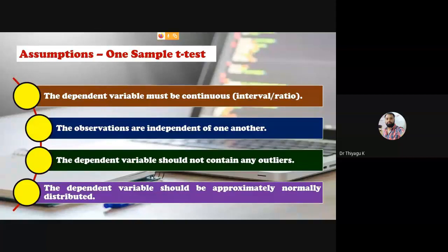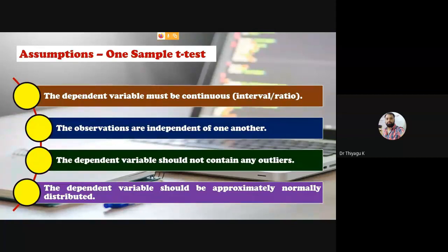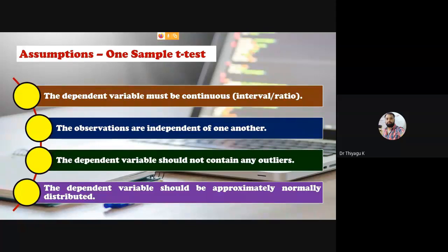The unrelated sample means each observation is independent of one another. The dependent variable should not contain any outliers. For example, if I conducted an examination out of 100 marks and nearly 99% of students scored above 60, but two students scored around 30 and 35, those outlier scores affect the mean and standard deviation. Therefore, kindly avoid datasets with outliers. The dependent variable should also be approximately normally distributed, since this is a parametric statistic.